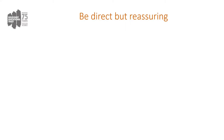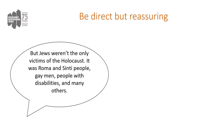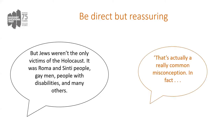If we look at one of those misconceptions and how it might materialise in a conversation, we can take this one here. Very well-intentioned — somebody might say: 'But Jews weren't the only victims of the Holocaust. It was Roma and Sinti people, gay men, people with disabilities, and many others.' Now, again, that's based on a misconception. But within that there's also an attempt at acknowledging that others were victims of Nazi persecution and that those stories are worth telling too. So what we want to do is be direct but reassuring, so our response could be: 'That's actually a really common misconception. In fact...' and then we'll follow up.